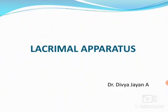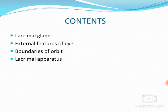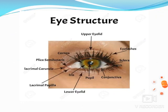Hello everyone, here I'll discuss the anatomy of the lacrimal apparatus. The topic includes the lacrimal gland, its features and secretomotor pathway, external features of the eye, boundaries of the orbit, and the parts of the lacrimal apparatus.